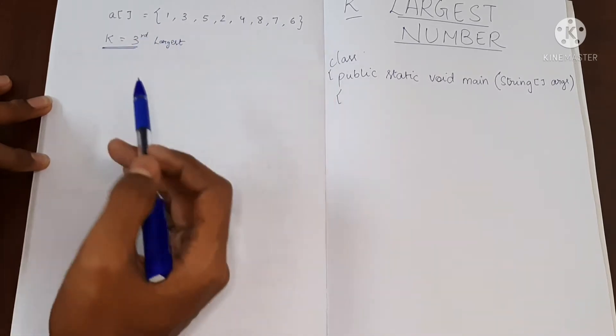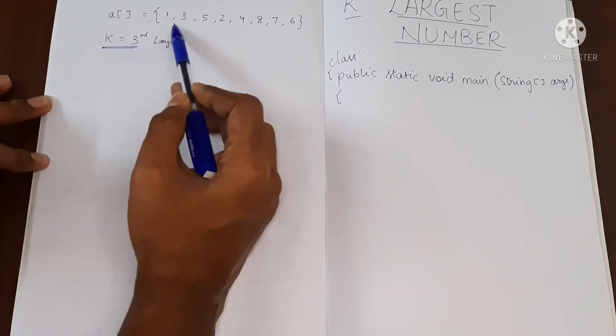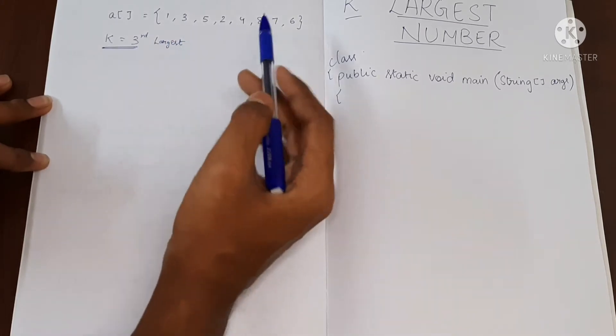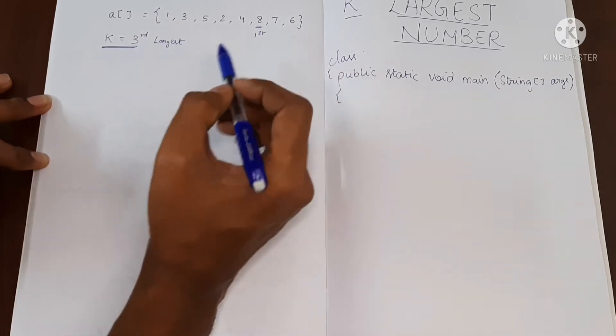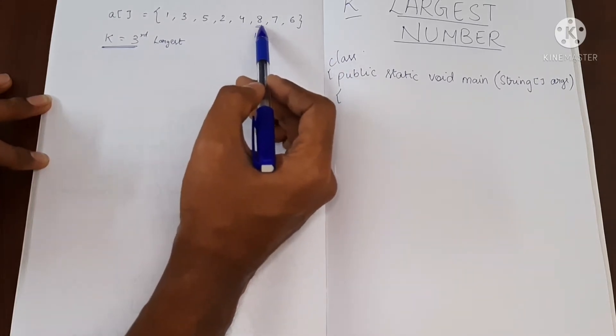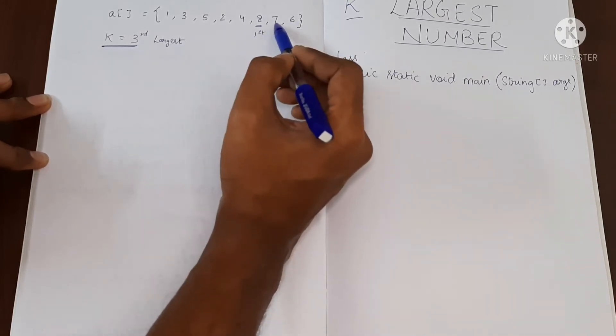So in this array, let's see which is the third largest value. If you check, 8 is the largest one. So we'll say it is the first largest, and then the value which is less than 8 is 7.